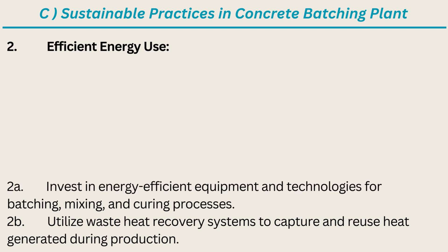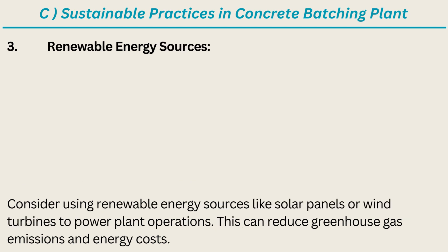2. Efficient Energy Use. A. Invest in energy-efficient equipment and technologies for batching, mixing, and curing processes. B. Utilize waste heat recovery systems to capture and reuse heat generated during production. 3. Renewable Energy Sources. Consider using renewable energy sources like solar panels or wind turbines to power plant operations. This can reduce greenhouse gas emissions and energy costs.